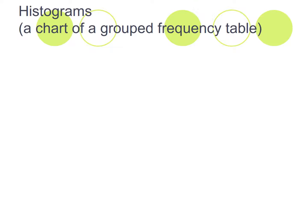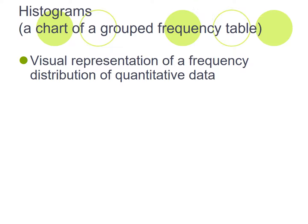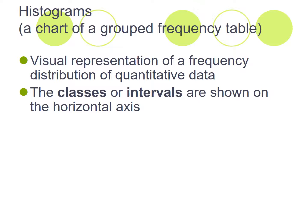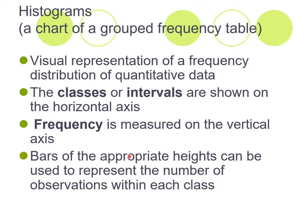Histogram. A histogram is a chart of a grouped frequency table. A visual representation of a frequency distribution of quantitative data. The classes or intervals are shown on the horizontal. So horizontal is across the bottom, and on the vertical axis is the frequency. That's on the height. Bars of the appropriate height can be used to represent the number of observations or the frequency within each class.